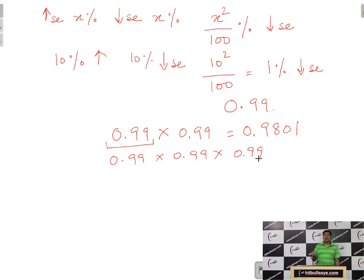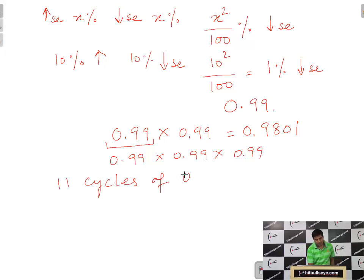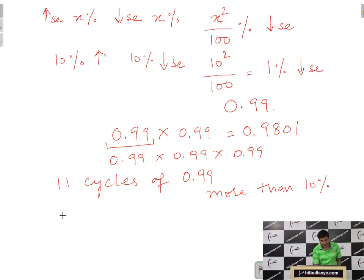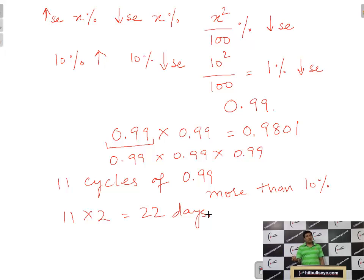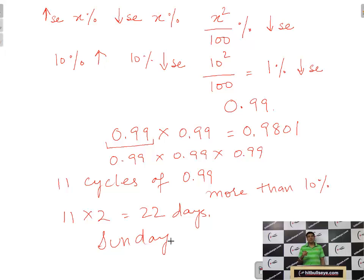For our problem, we need a reduction of more than 10%, so we need 1 more cycle than 10 — that is 11 cycles of 0.99. 11 cycles of 2 days means 11 × 2 = 22 days after we started. Supposing we started on a Sunday, the 22nd day will again fall on a Sunday, which is when for the first time he incurs a loss of more than 10%.